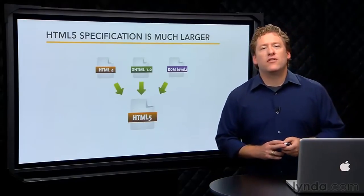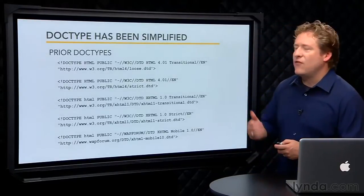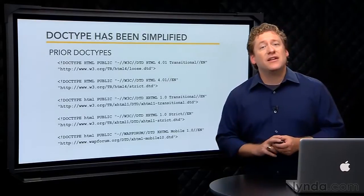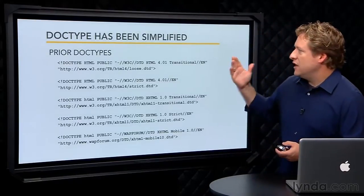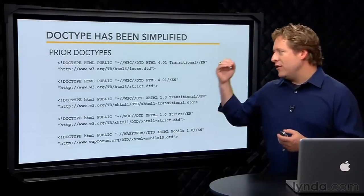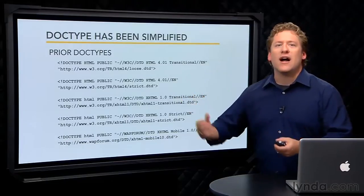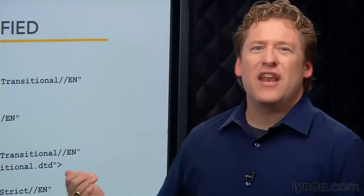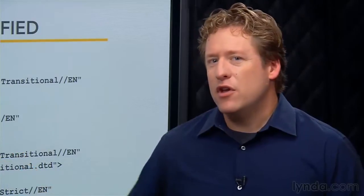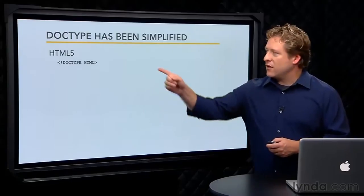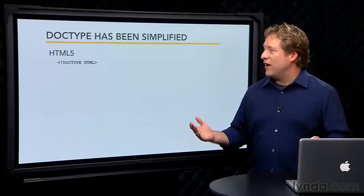One of the first places you'll notice a difference in writing HTML5 documents is the DOCTYPE and character encoding. Here we have some HTML4 DOCTYPEs, and you can see how many of them there are and how long and complicated they are. Rather than having to deal with multiple DOCTYPEs, you just use a single, simple DOCTYPE that declares the document as an HTML file.